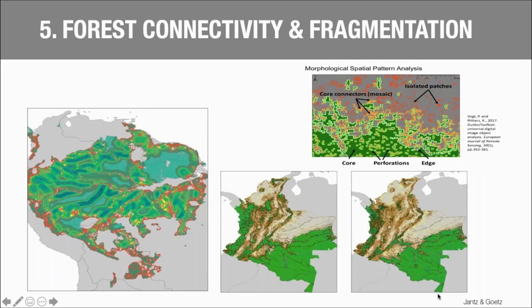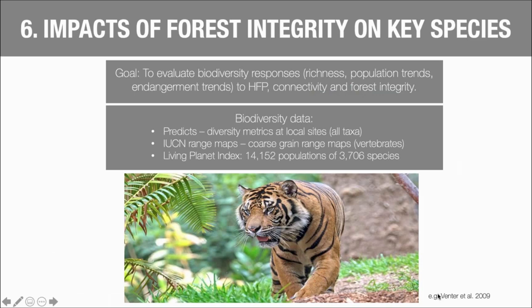The fifth data layer, developed by Scott Goetz and Patrick Jantz at Northern Arizona University, looks at forest fragmentation and connectivity across high-integrity forest patches. These data help identify isolated patches, core areas for connectivity, and edge forest among other factors. One more forthcoming data layer will look at the impact of forest integrity on key species — evaluating biodiversity responses to human footprint, connectivity, and forest integrity, looking at ranges of individual species and aggregations of key species. We hope to have this available by the middle of this year, adding it to UN Biodiversity Lab to support action at the intersection of science and policy.